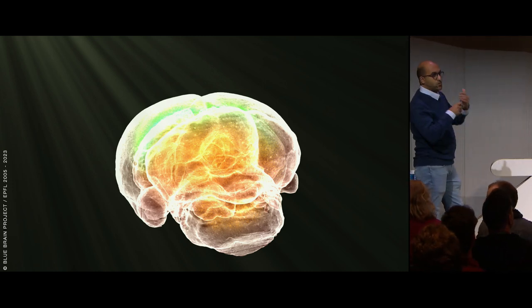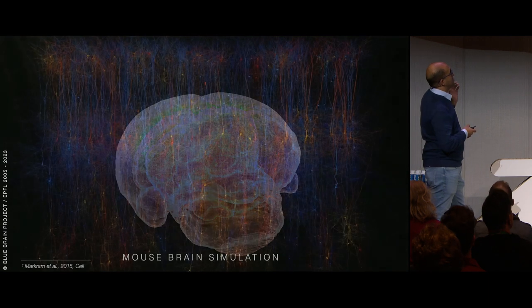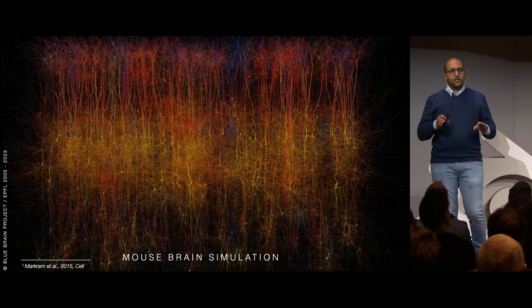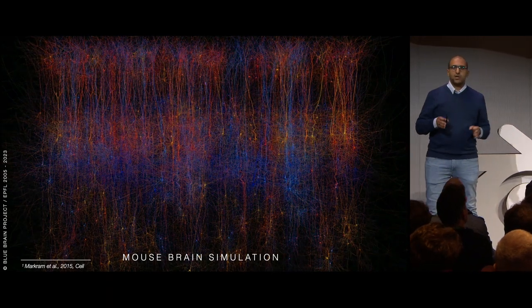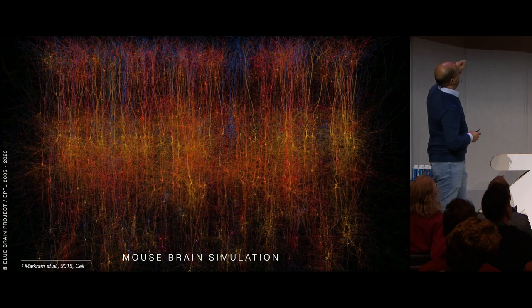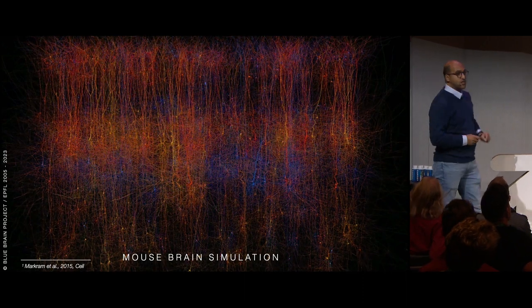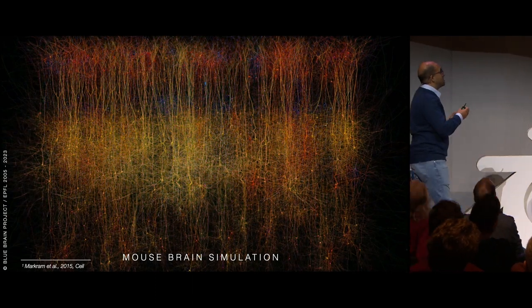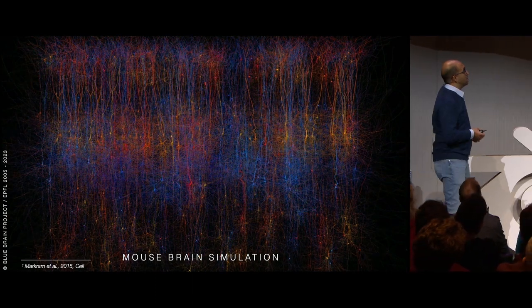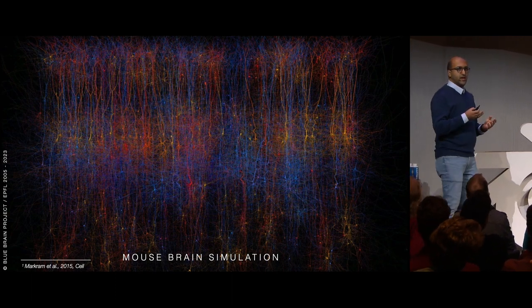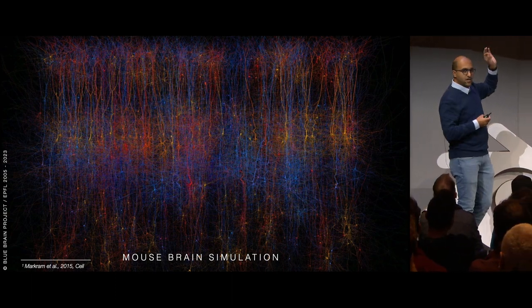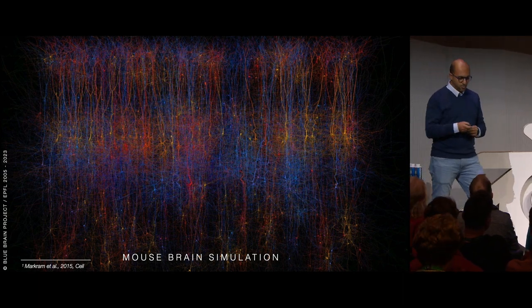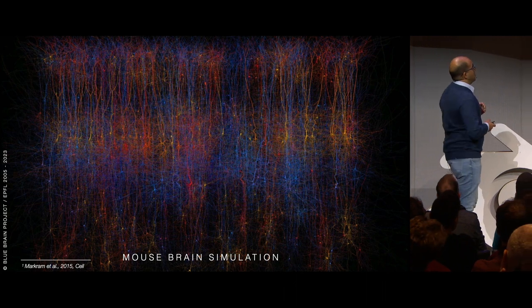To visualize what we are doing: this is a mouse brain simulation that has been completely digitally reconstructed and simulated in a supercomputer. Every individual object in this slice is a neuron. When we perform the simulation we expect to see some results, so we have to make sure that the morphologies of the neurons - the shapes - are correct, because morphology impacts function.